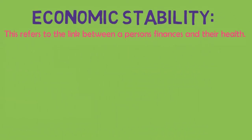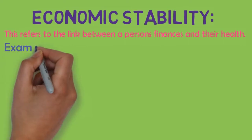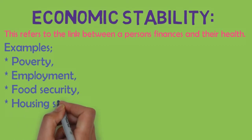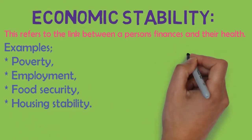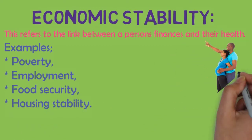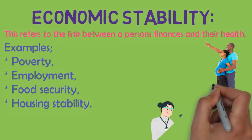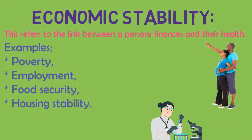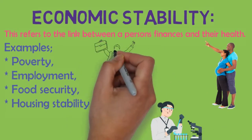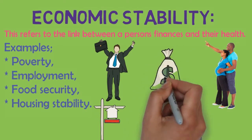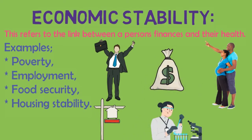Secondly, economic stability. This refers to the link between a person's finances and their health. Examples of these factors are poverty, employment, food security, and housing stability. Economic stability is vital to affording lifestyle choices and paying for quality medical care. A well-paying steady job is critical for food security and housing stability, however savings are essential for managing chronic conditions or emergencies.